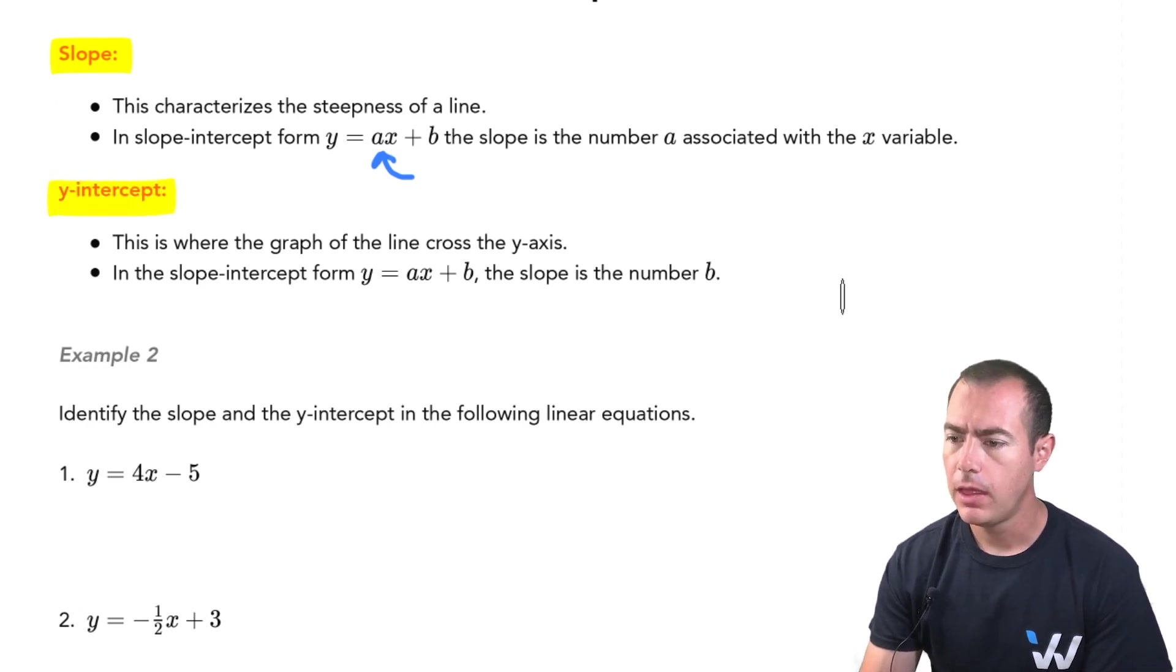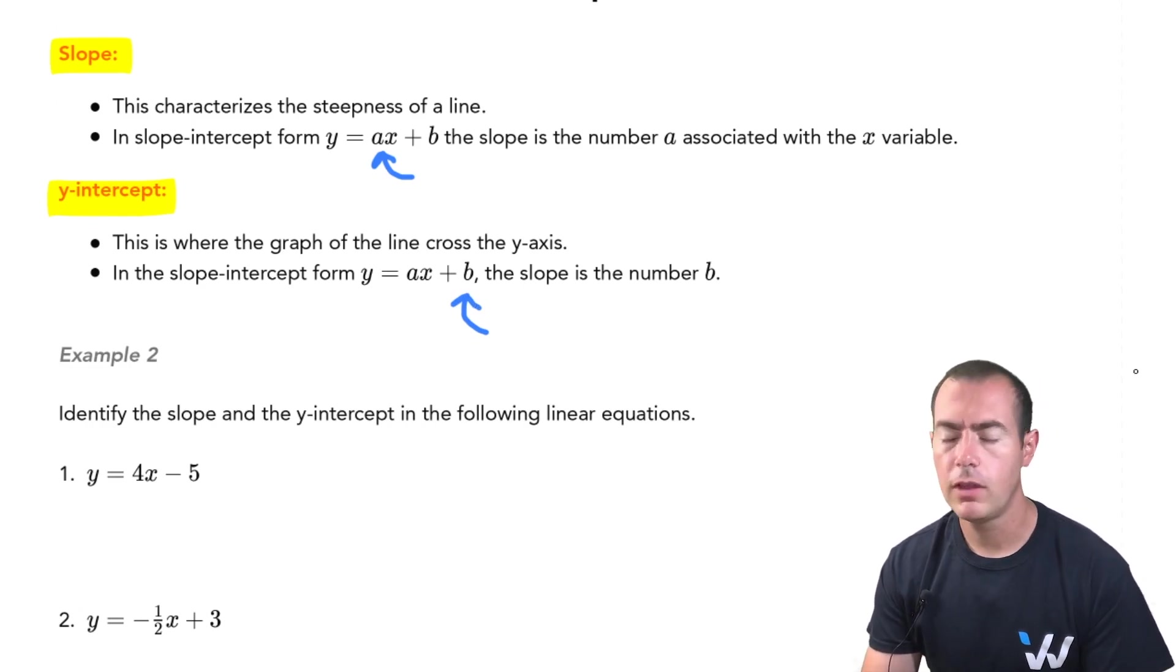For the y-intercept, that is going to be the second value, so that's going to be the value of b. Specifically, this is the y-intercept or where it crosses the y-axis. And with those two things, you have plenty of information that you can go ahead and actually graph the line.